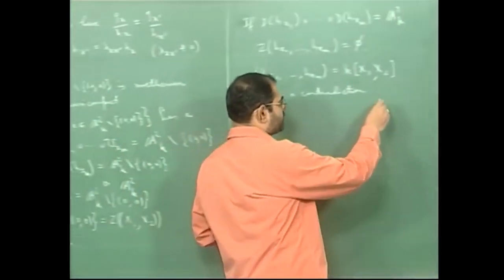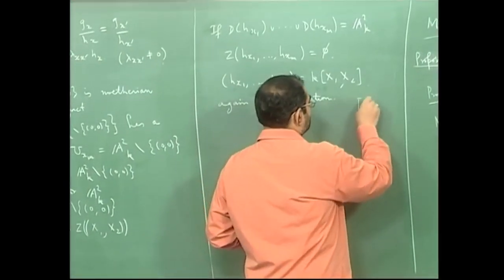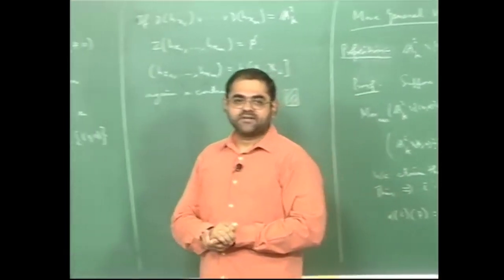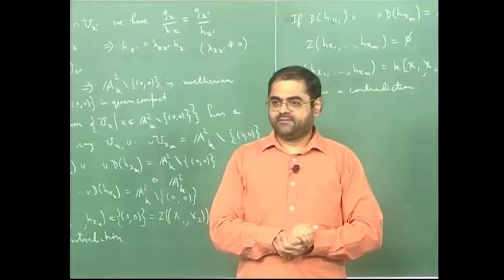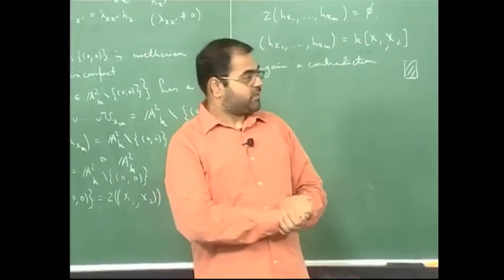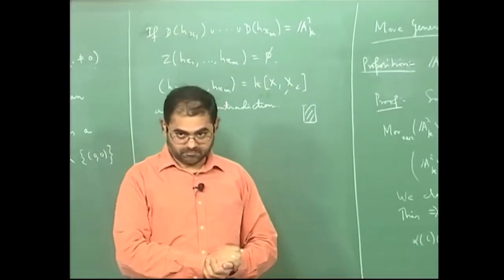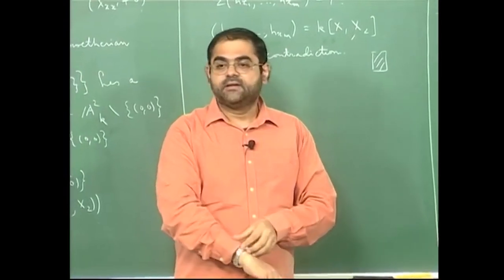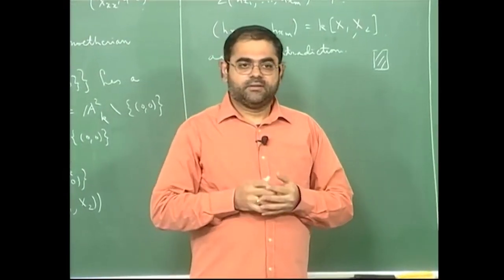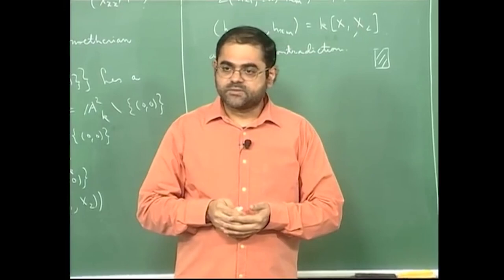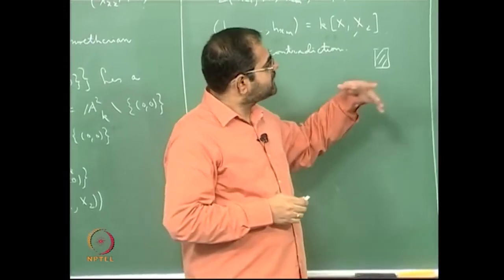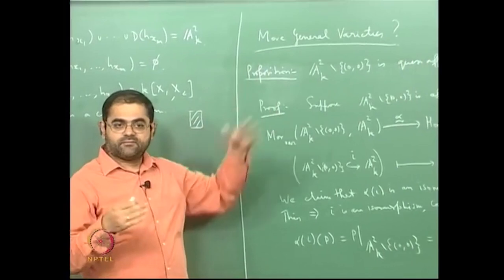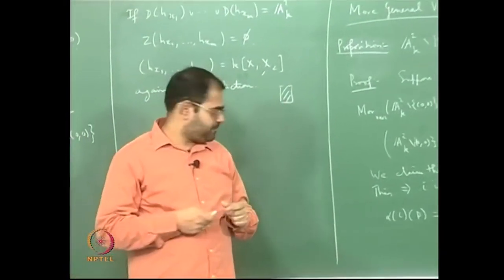The moral of the story is that the punctured plane A^2 minus the origin is an example of a quasi-affine variety which is not affine. We do have quasi-affine varieties that are not affine. In the next lecture, I will talk about projective varieties and quasi-projective varieties, which are more general than affine and quasi-affine varieties.